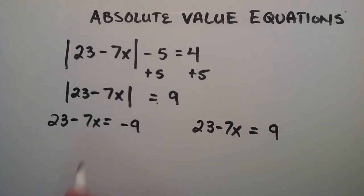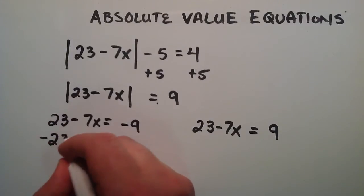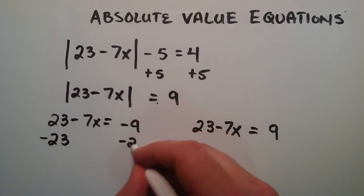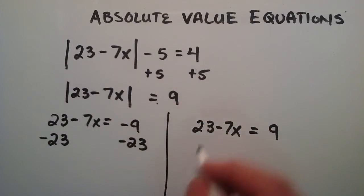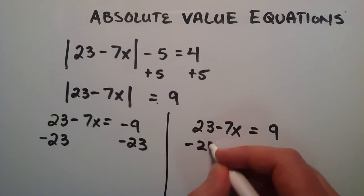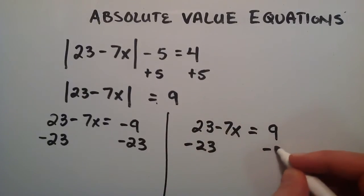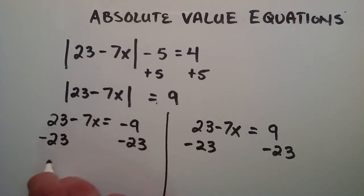So now that we've got our two equations here, we're just going to subtract 23 from both sides of each equation. And on this side as well, minus 23 and minus 23. So a positive 23 and a negative 23 just give us 0.